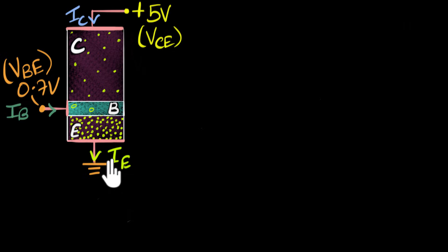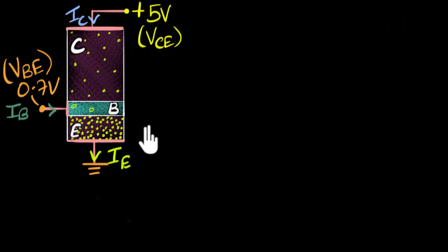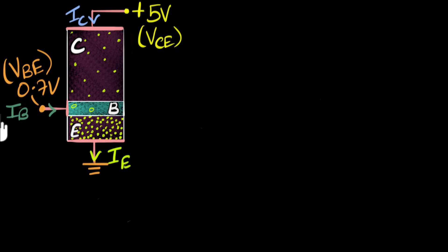An NPN transistor connected in such a way behaves as an amplifier, but it doesn't always amplify. There are certain conditions for that. So in this example, we'll explore this in great detail — we'll understand under what conditions our transistor acts as an amplifier and under what conditions it doesn't. We'll explore the complete behavior of a transistor in this video.